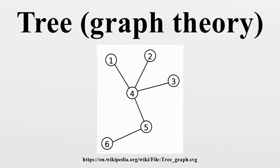The tree order is the partial ordering on the vertices of a tree with u less than or equal to v if and only if the unique path from the root to v passes through u. A rooted tree which is a subgraph of some graph G is a normal tree if the ends of every edge in G are comparable in this tree order whenever those ends are vertices of the tree.